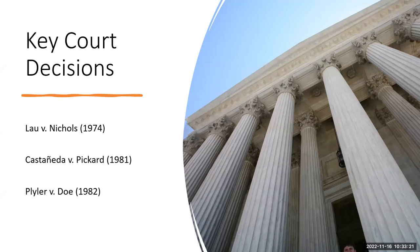The first is Lau versus Nichols, a landmark Supreme Court decision from 1974 that nearly 50 years later remains a major precedent regarding educational rights of language minorities. It states that there is no equality of treatment merely by providing students with the same facilities, textbooks, teachers, and curriculum, for students who do not understand English are effectively foreclosed from any meaningful education. The case reaffirmed that all students in the United States, regardless of native language, have the right to receive a quality education, and clarified that equality of opportunity means the same opportunity to receive an education. An equal education is only possible if students can understand the language of instruction.